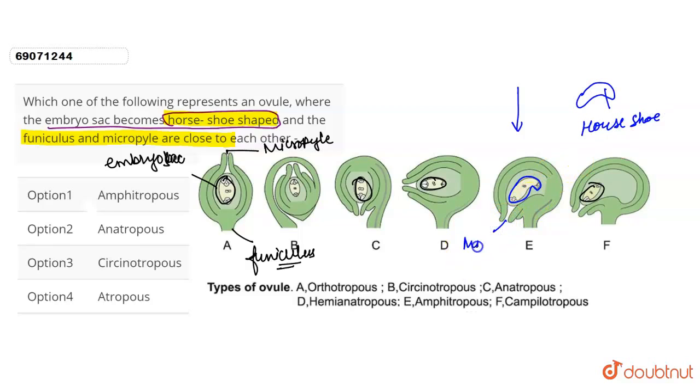Then we have this is the micropyle and the opening, and this part is the funiculus. Funiculus or funicle, one and the same thing. In this particular part, we see that these two are very close to each other.